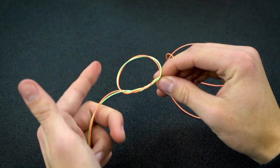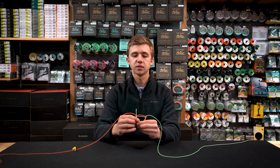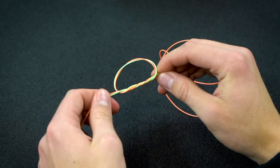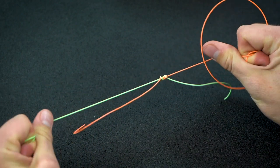If we were to finish the knot here, that would be your double surgeon's. To make a triple surgeon's, loop once more and then pull down on all four tag ends here to seat the knot.